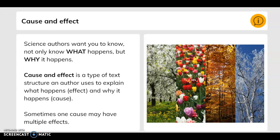Cause and effect. Science authors want you to know not only what happens but why it happens. Cause and effect is a type of text structure an author uses to explain what happens, effect, and why it happens, the cause. Sometimes one cause may have multiple effects.